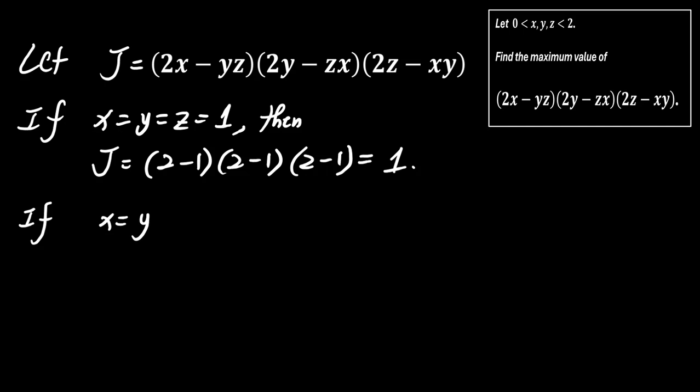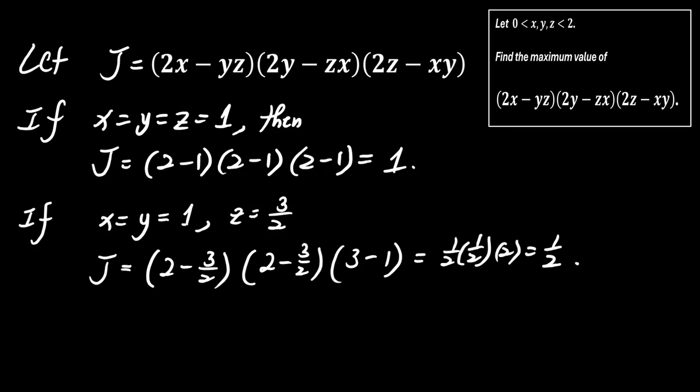Now try x equals y equals 1, and z equals 3 over 2. Then J equals (2 minus 3 over 2) times (2 minus 3 over 2) times (3 minus 1). That is 1 half times 1 half times 2, which equals 1 half. So we know the maximum value of J can be at least 1.